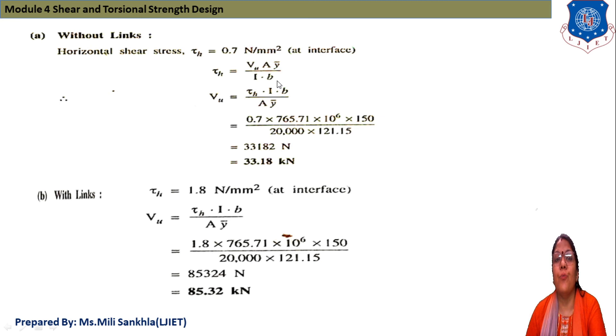First, without link: horizontal shear stress is given 0.7 N/mm². τh = Vu·A·ȳb/(I·b). Now we find ultimate shear force Vu = τh·I·b/(A·ȳb) = 0.7 × 765.75 × 10⁶ × 150 / (20,000 × 121.15), and Vu = 33.18 kN.